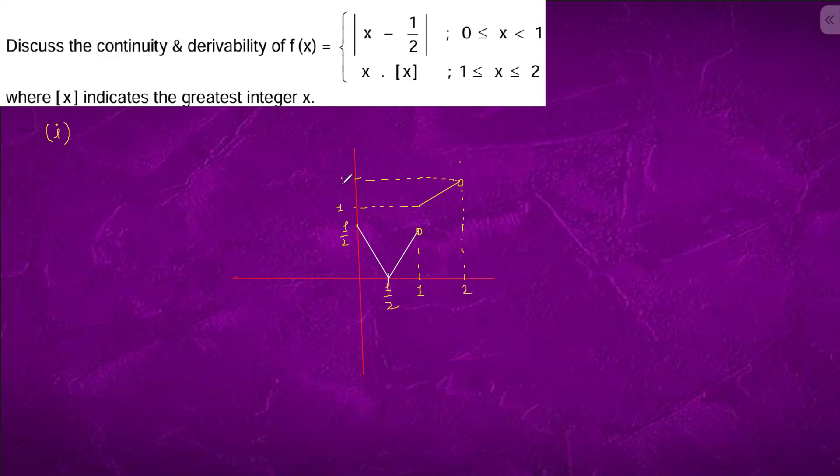So I am solving now. Case 1: x less than 1/2, it is minus x plus 1/2. So this is equation 1. Case 2: x bigger than or equal to 1/2, it is x minus 1/2. So this is equation 2.